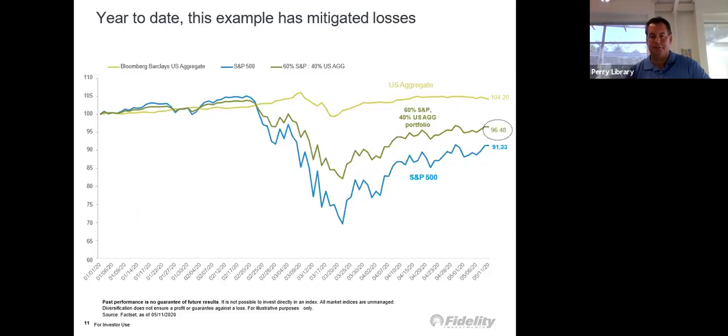Year to date, this is an example of the losses. The top line, the U.S. aggregate, is more of a bond portfolio, and that pretty much stayed pretty level. If you do a mix of the S&P 500 and the U.S. aggregate bond portfolio, it dipped a little bit, but it didn't dip as much as if you had a full S&P 500.